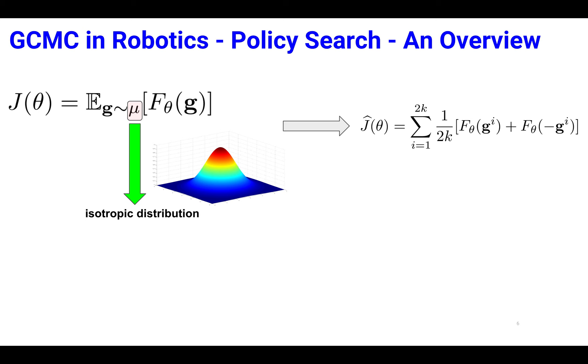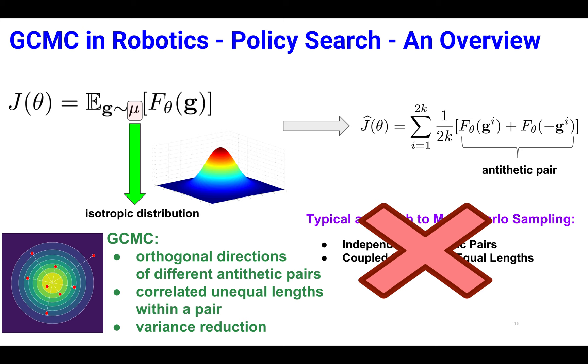In that scenario, a common Monte Carlo baseline uses antithetic pairs, where different pairs are chosen independently, and coupled samples are of equal lengths.